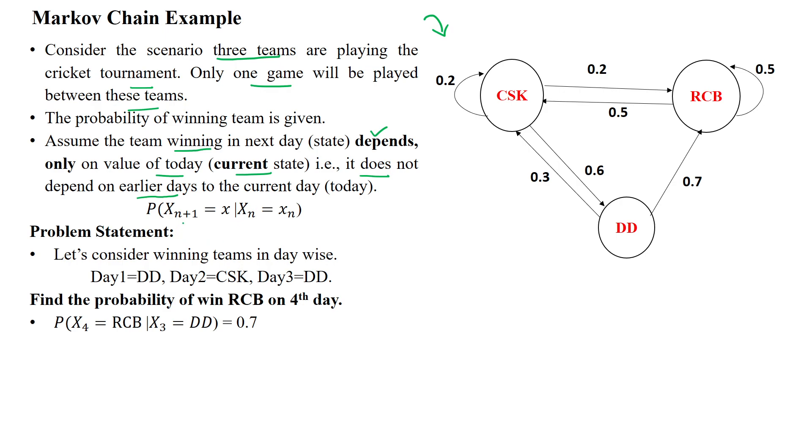The current state is depending on the previous state. Otherwise, we can say next state is depending on the current state. X_{n+1}, this is the next state given the current state. Current state is generating the next state. That is the Markov chain property. So problem statement is given.